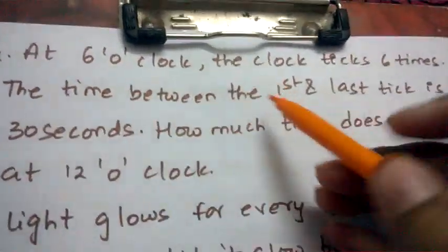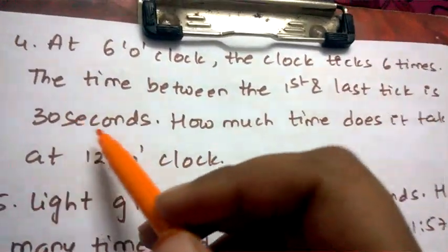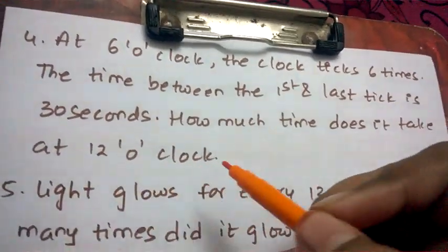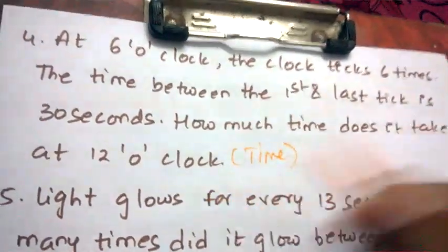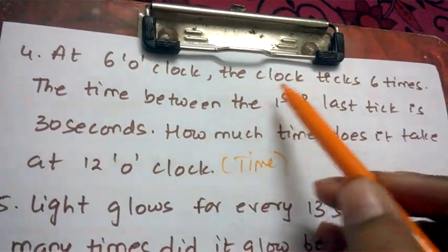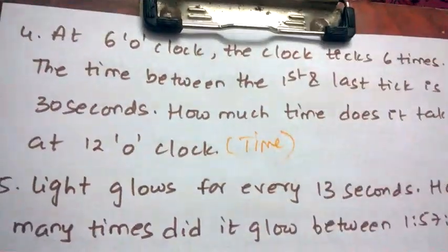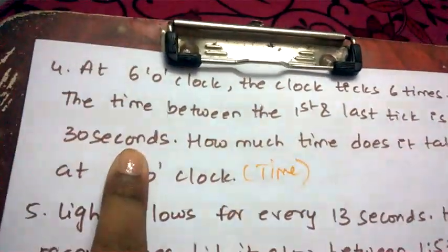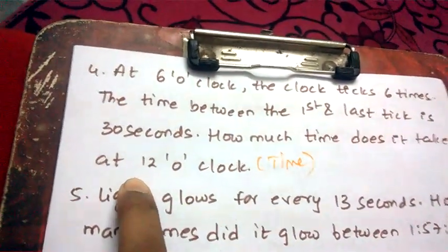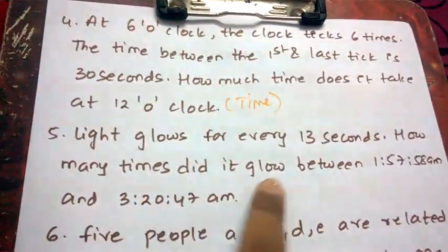Next question: At 6 o'clock the clock ticks six times. The time between the first tick and the last tick is 30 seconds. How much time does it take at 12 o'clock? This is a time problem.